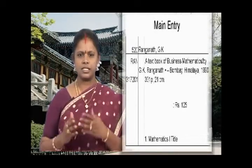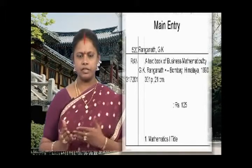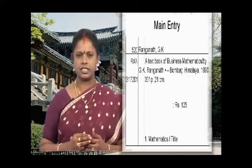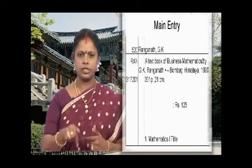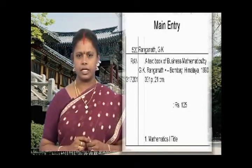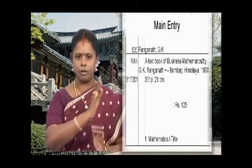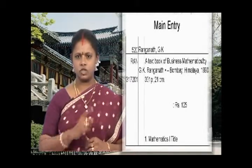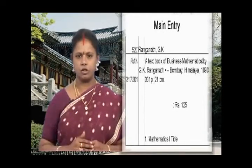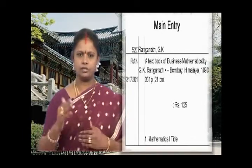Below that line, write the book number, given as RAN. This book number is normally the year of publication, but if the year is not known, we take the first 3 letters of the author's surname. In this example the author's surname has been taken as the book number, completing the call number section. After that, leave one line and write the accession number as given in the title page.